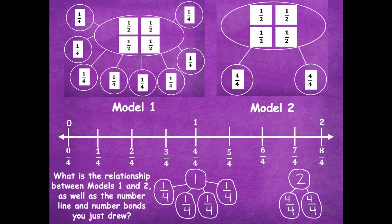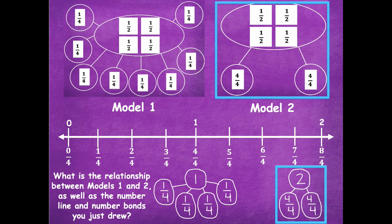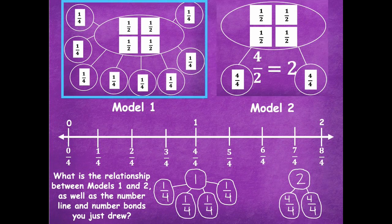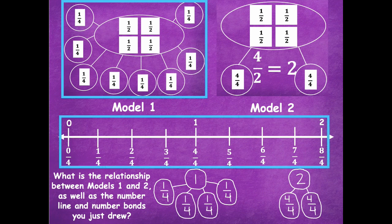What's the relationship between models one and two, as well as the number line and number bonds we just drew? The number bond for two wholes looks just like model two — except model two is in halves on top, but four halves is two, so it's modeling the same thing. And model one matches our number line: we have eight fourths from zero to two on the number line, and we also have eight fourths in our number bond.